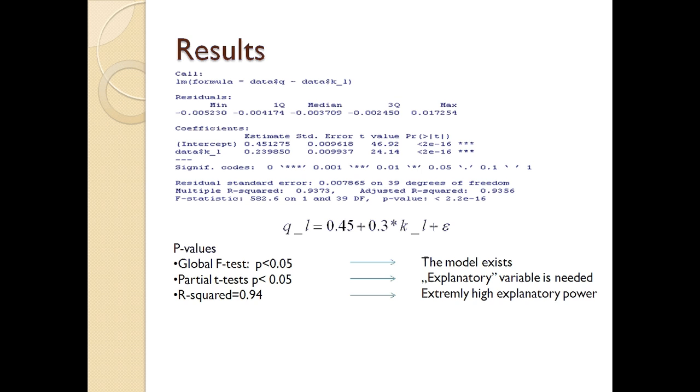The coefficient of capital-to-labor ratio here means that 1% change in capital-to-labor ratio leads to a 0.25% increase in Q. This interpretation can be derived from logarithmic form of the equation.